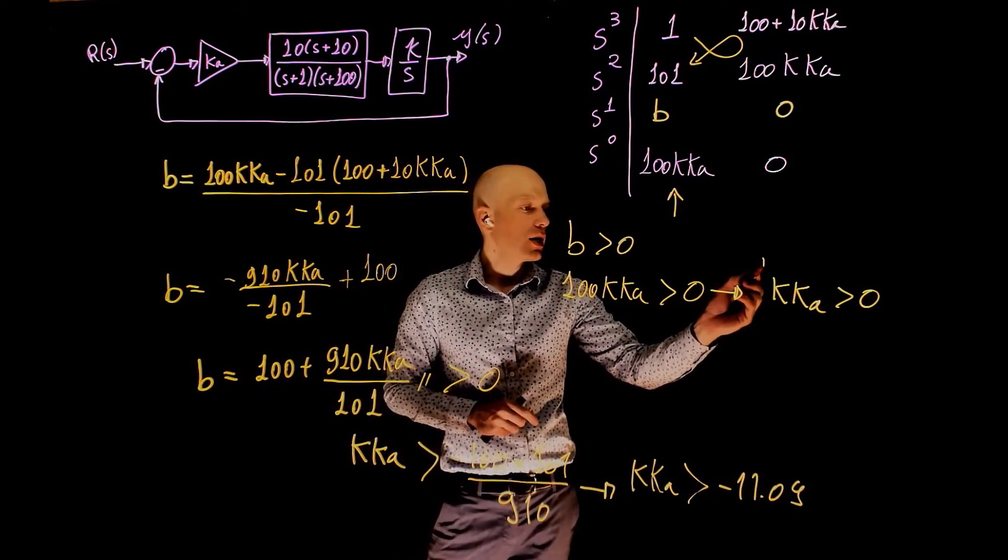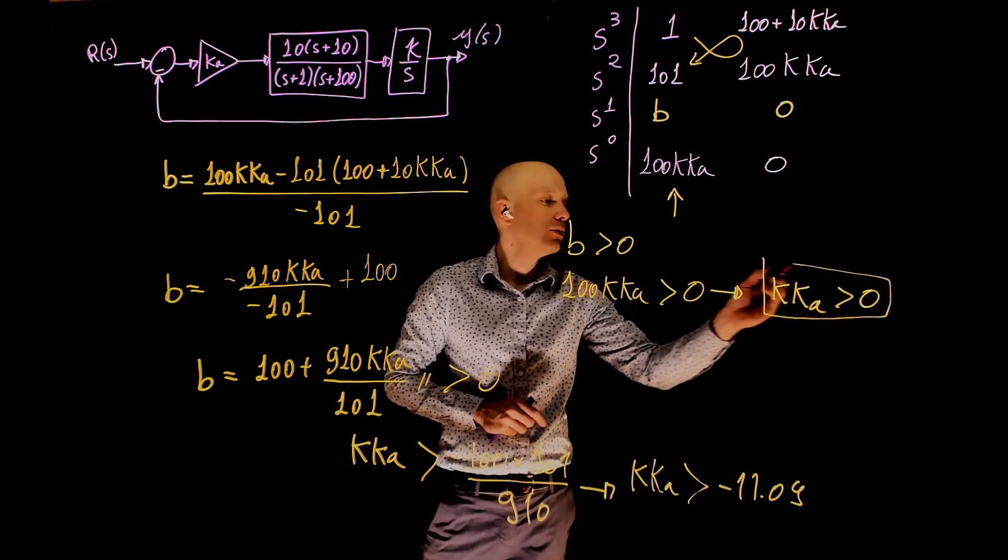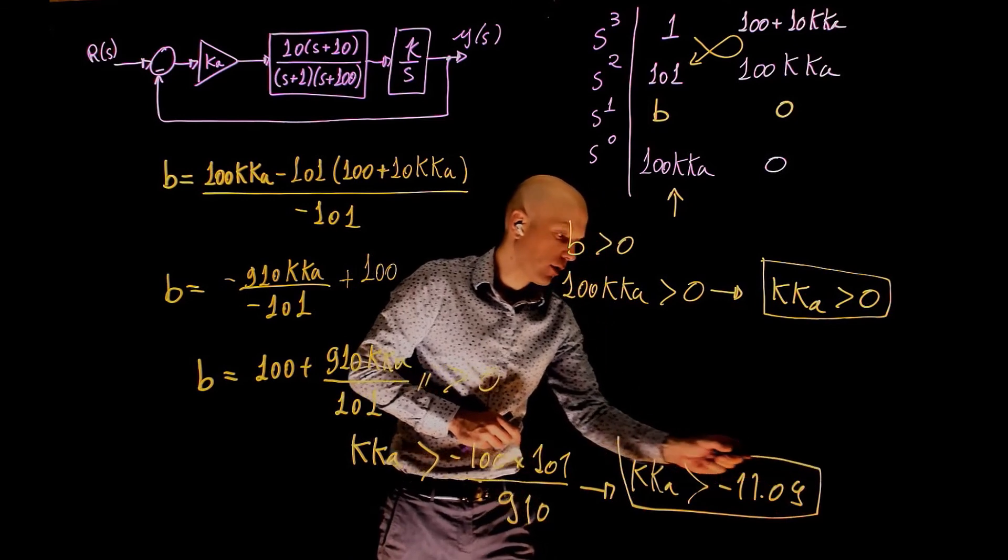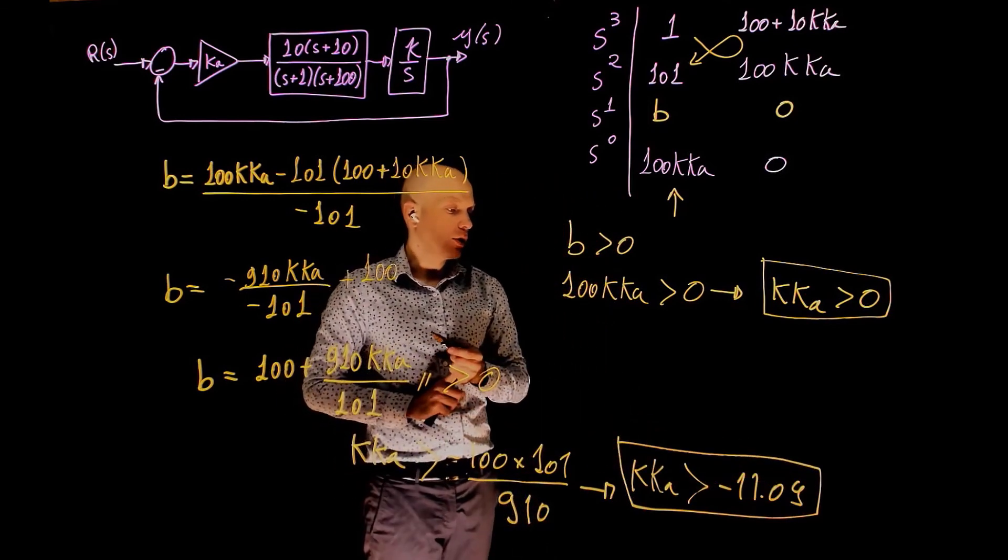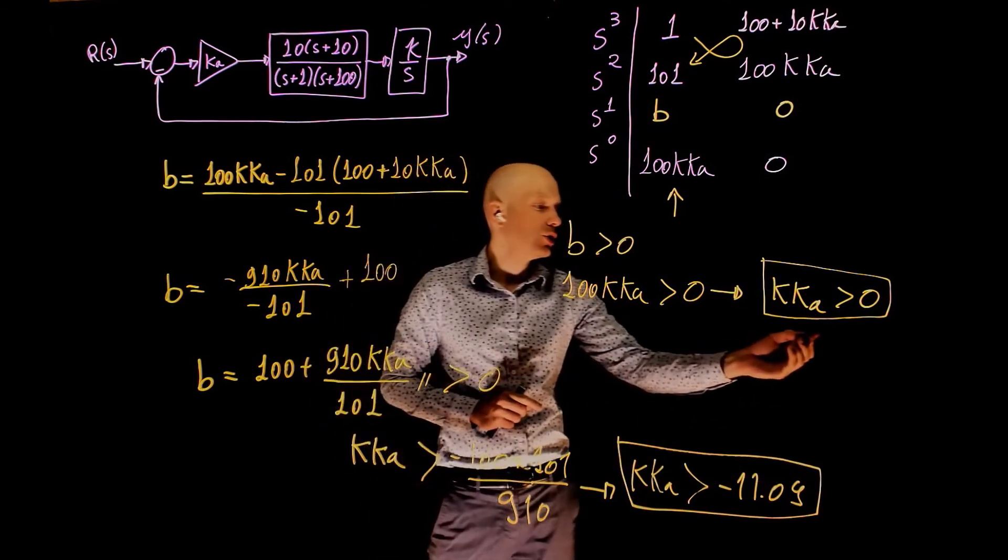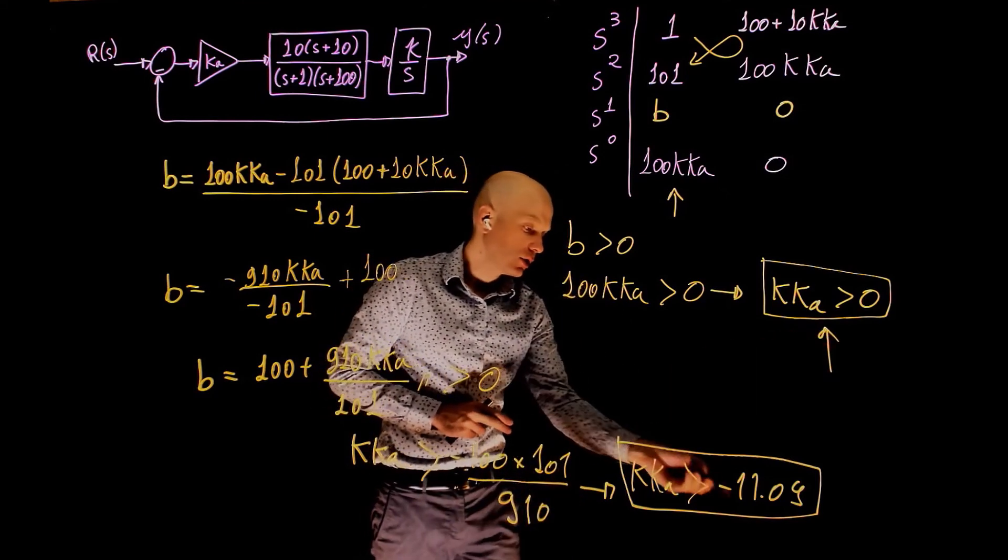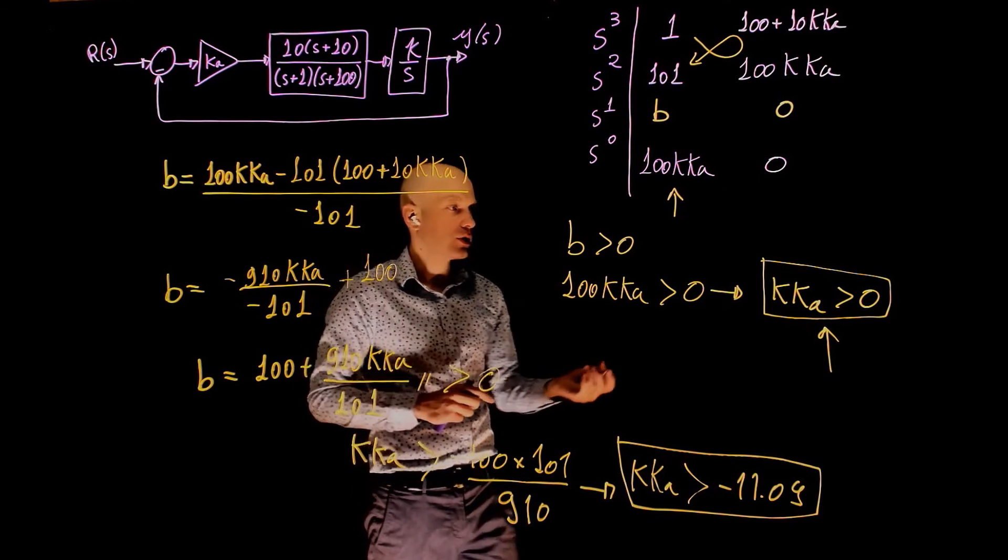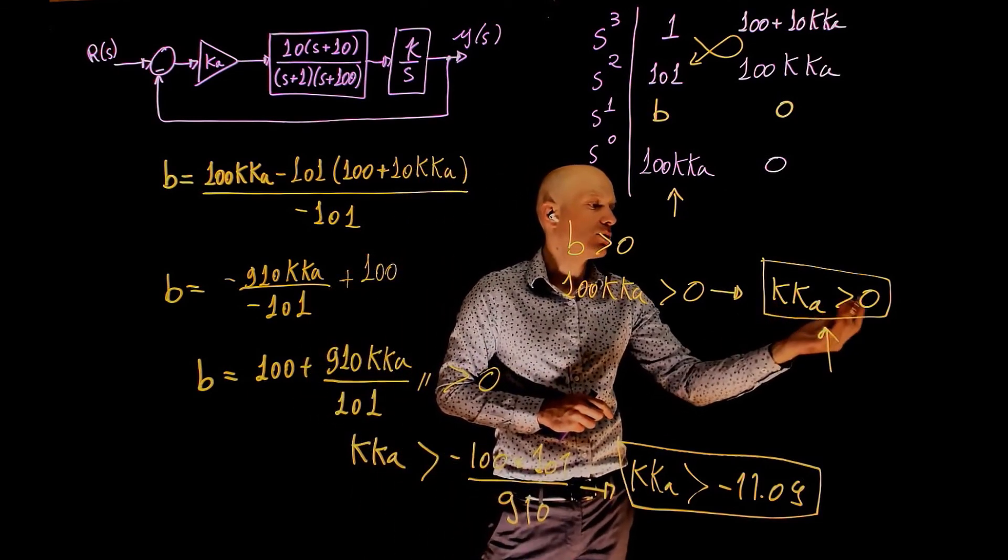So here is one condition, kka needs to be greater than 0, and kka needs to be greater than negative 11.09. Of course, if this condition is met, this second condition is also respected. So the only condition for stability is that kka is greater than 0.